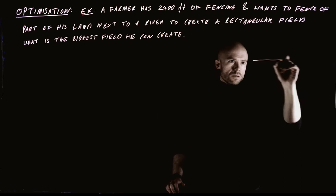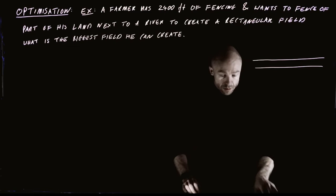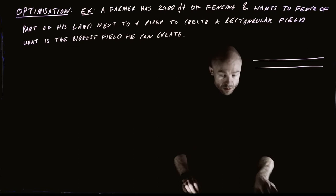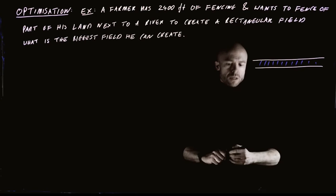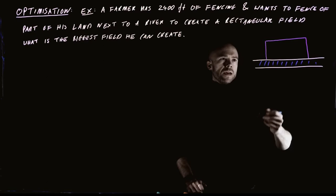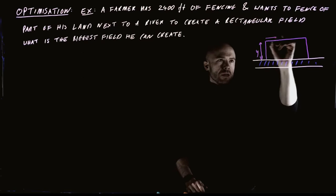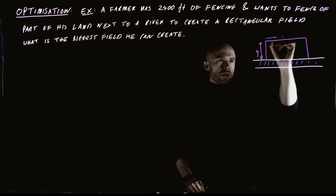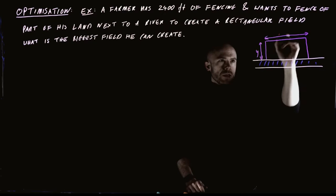We start by drawing a picture. This is the river. The farmer wants to create a rectangular field, so its sides are going to look like this. The dimensions: we could call this side y and this side x. If it's a rectangular field, that's all we have to choose — we have to choose its depth and we have to choose its length.